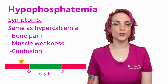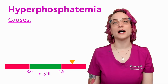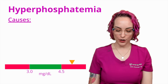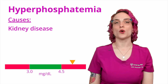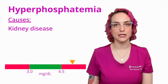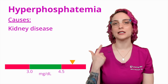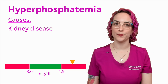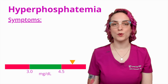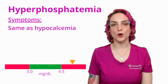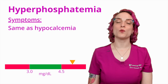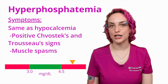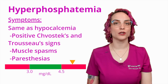What about hyperphosphatemia? This is a phosphate level that is greater than 4.5 milligrams per deciliter. A big cause is going to be kidney disease — patients with kidney disease are at high risk for hyperphosphatemia, and this is one of those times I'm thinking specifically about phosphorus as an electrolyte on its own. Symptoms associated with hyperphosphatemia are going to be similar to those associated with hypocalcemia, so we might have a positive Chvostek or Trousseau sign, muscle spasms, and numbness and tingling, especially around the mouth.